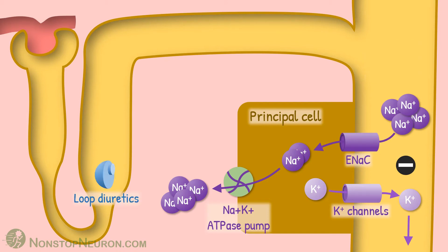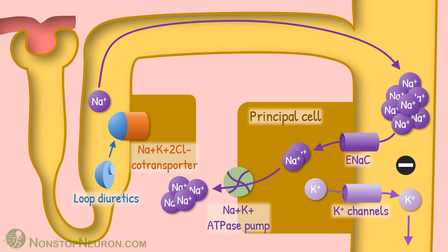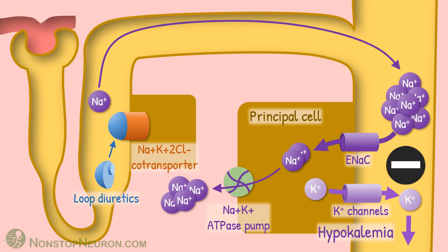Now let's bring in loop diuretics. They work at the ascending limb of the loop of Henle, where sodium is reabsorbed by the sodium-potassium-2 chloride cotransporter. Loop diuretics inhibit this cotransporter, leading to decreased sodium reabsorption at the loop of Henle. So more sodium reaches the collecting duct, more of it enters into the cell and makes the lumen more electronegative, and this in turn increases potassium secretion. Finally, increased potassium loss causes hypokalemia.